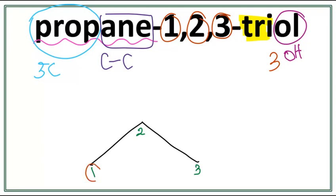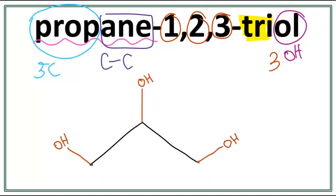So an OH attaches here, an OH attaches here, and the third OH attaches here. Let's get rid of these numbers and attach the OH on the first, second, and third carbon. This is the structure for propane-1,2,3-triol.